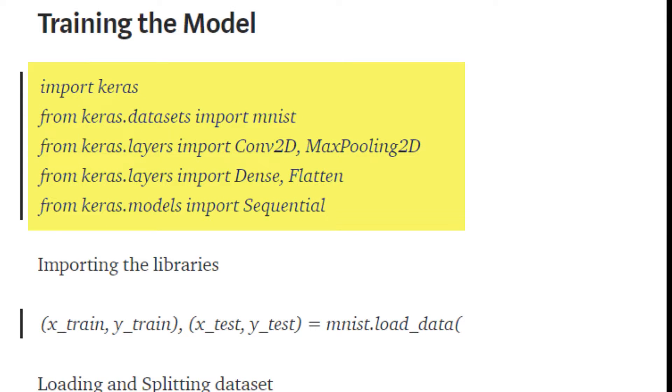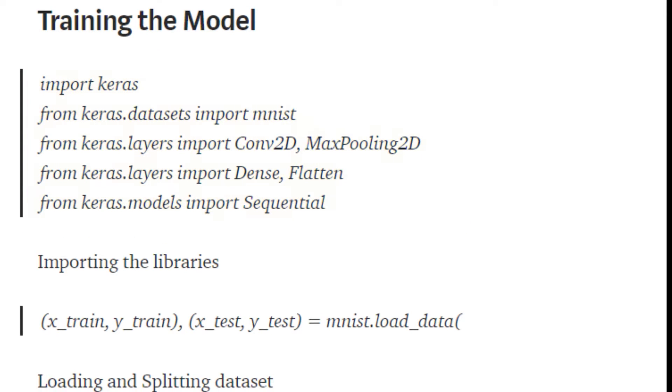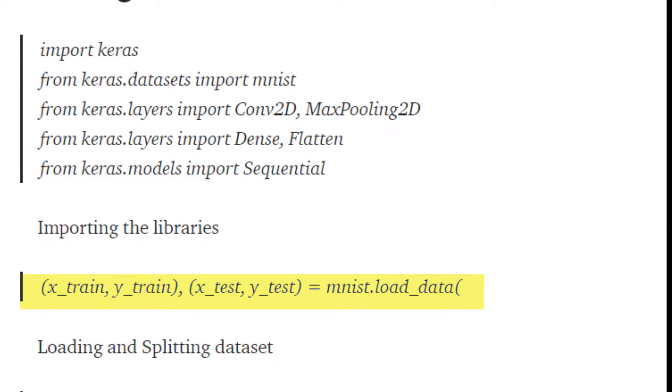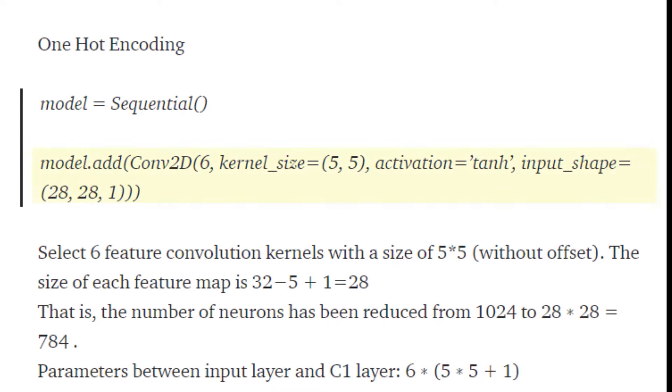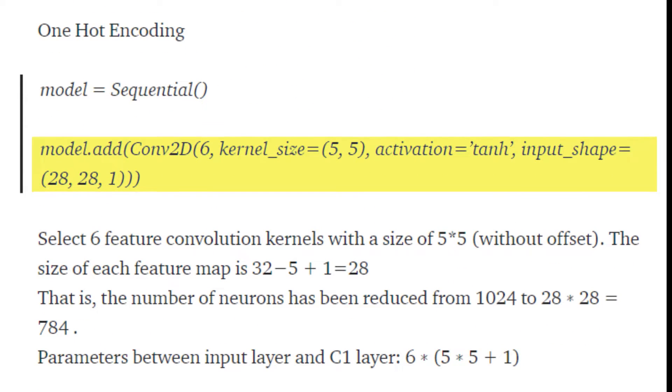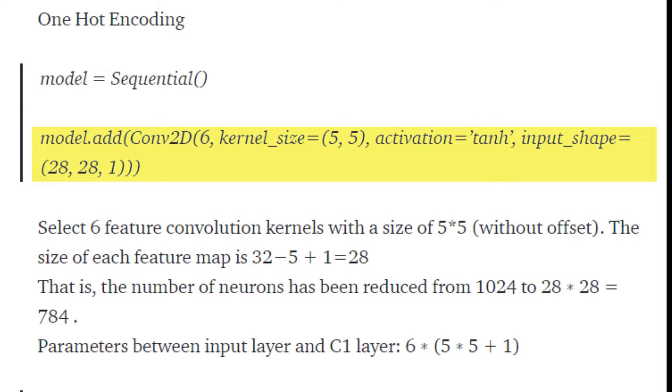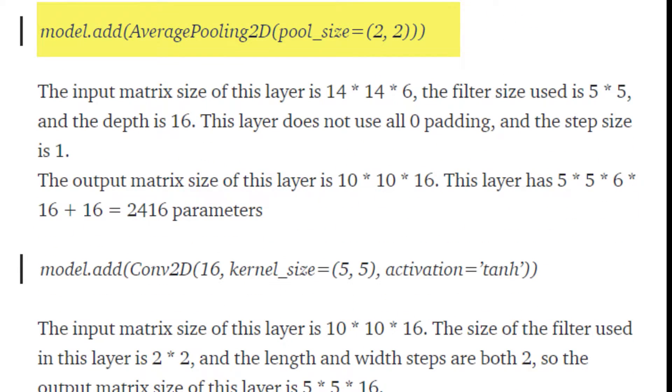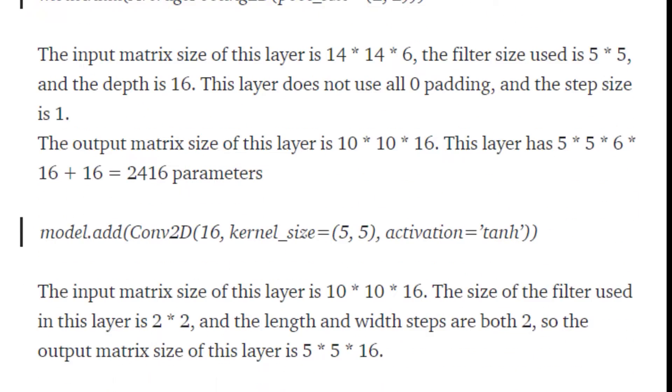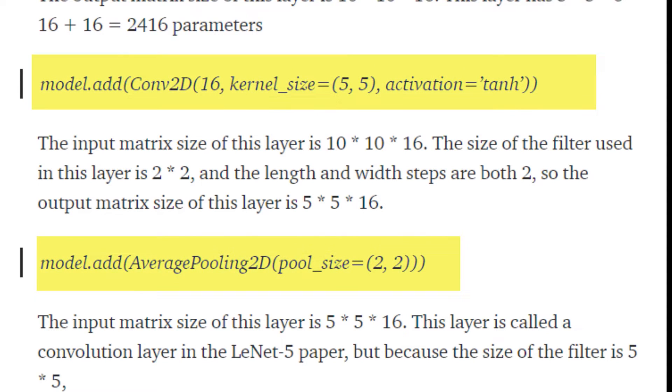Here you can see we have imported all libraries, separated train and test images, and added our first layer: 6 convolutions of size 5x5 with activation function tanh, as discussed earlier. Then we apply average pooling of size 2x2. Similarly, we apply our other two layers.